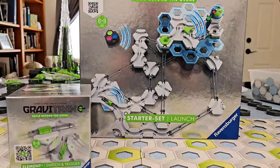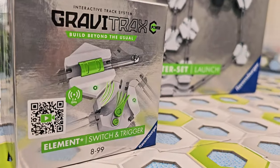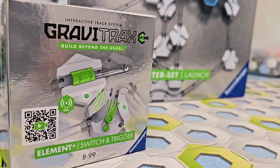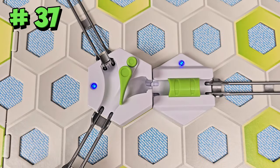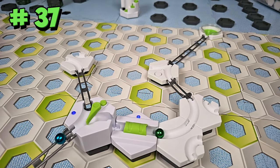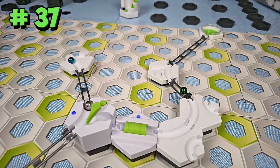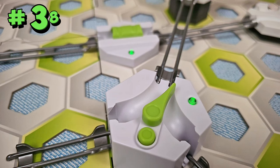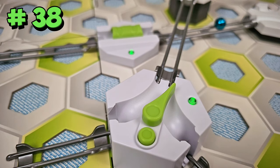Now I'm going to show you some creative ways to use the elements from the GraviTrax power switch and trigger element box. Place the trigger after the switch to make a one-way switch. The first marble will go in one direction, but all other marbles will go in the other direction.